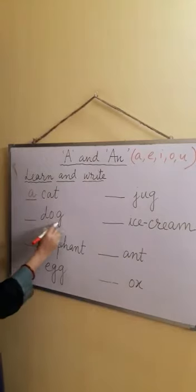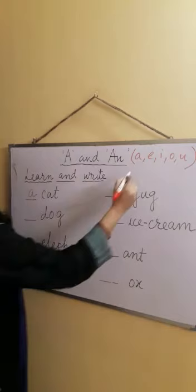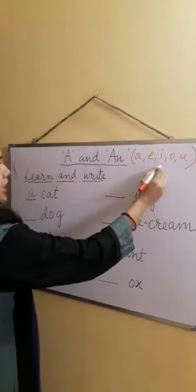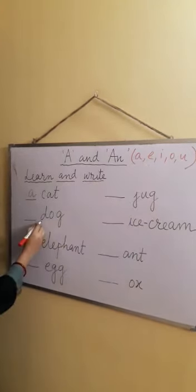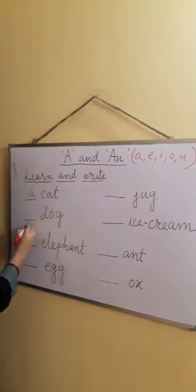Dog - D-O-G, dog. D - there is no D here. A, E, I, O, U - so this is a consonant, this is not a vowel. Again we will use A here.